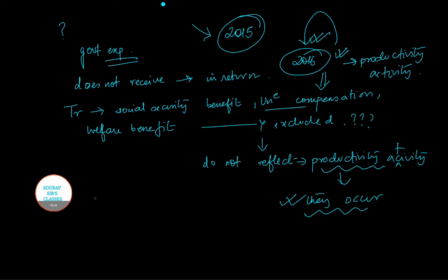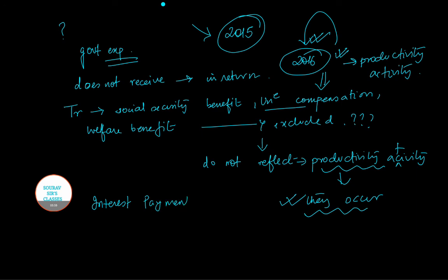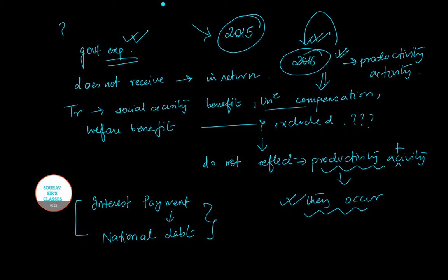Similarly, interest payments — specifically interest payments on national debt — since we are talking about government expenditure, this is worth including. Interest payments on national debt are counted as part of government expenditure in GDP accounts, but this is also not included in national income accounting or GDP when we calculate GDP.